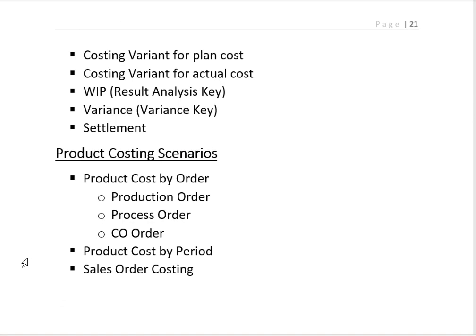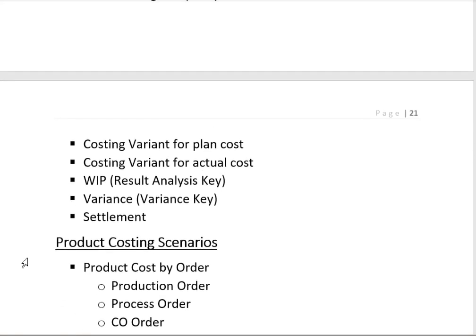The second scenario is Product Cost by Period, used for industries where only a small number of finished goods are manufactured — for example, in the sugar industry where sugar is the main product, and we calculate the cost period by period for the sugar. The third scenario is Sales Order Costing, where we calculate the cost using the sales order. This is used for industries where production starts only after receiving a sales order from the customer, like the aeroplane industry, where the sales order is the cost object.